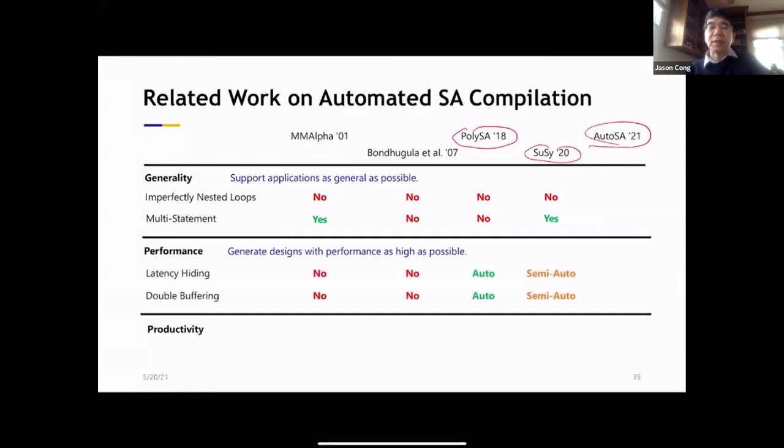In order to get good performance, you have to think about the latency hiding, double buffering, a number of techniques. So we also look at what they support. And finally, in design productivity, as I said, once something can be mapped to CSA, that's not just one design point, you can actually have millions of design points. And how do you pick the best one? Many of them actually do not offer you that flexibility. You have to pick manually. So the AutoSA I'm going to talk about in a moment actually has all these dimensions covered.